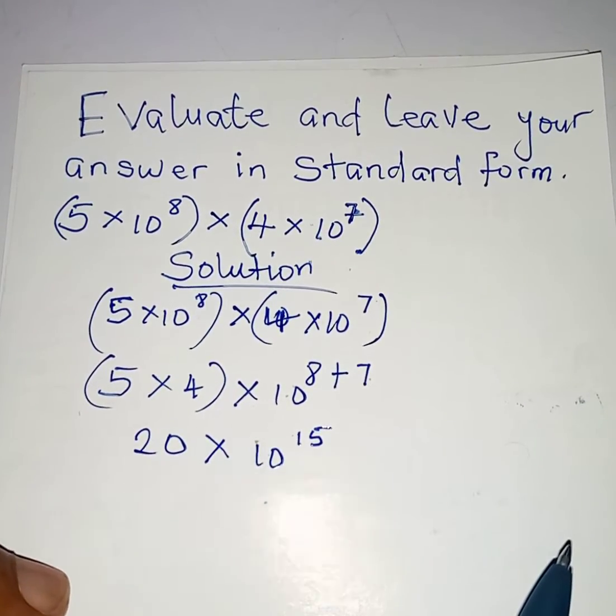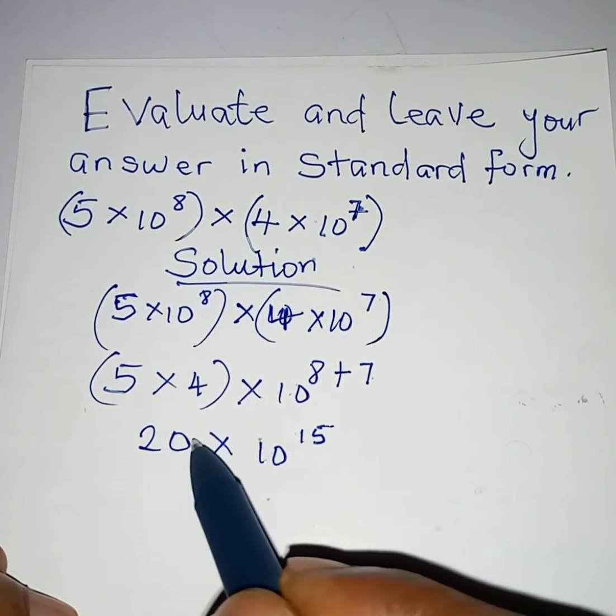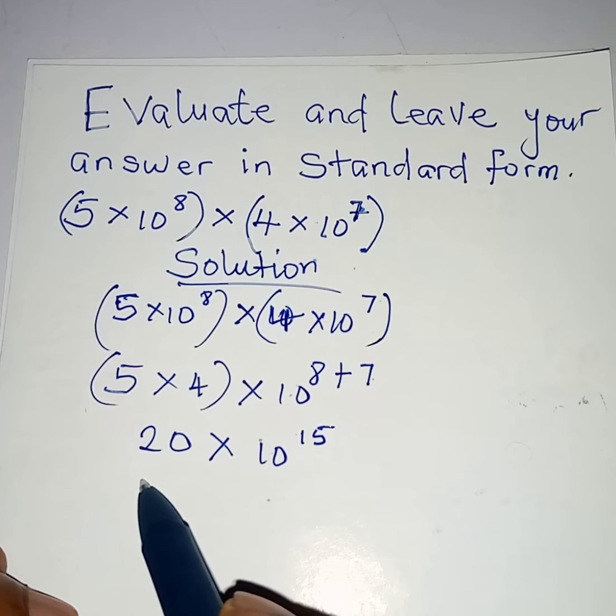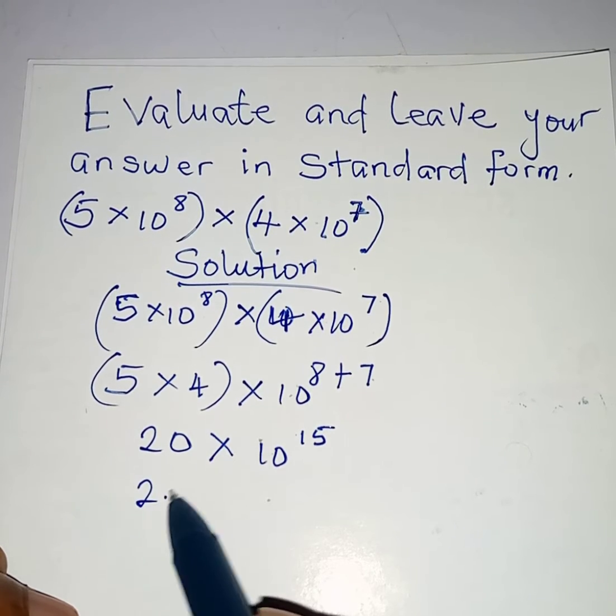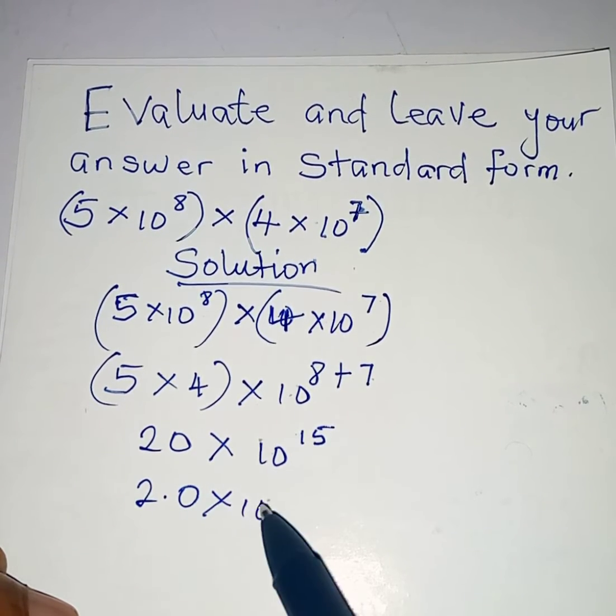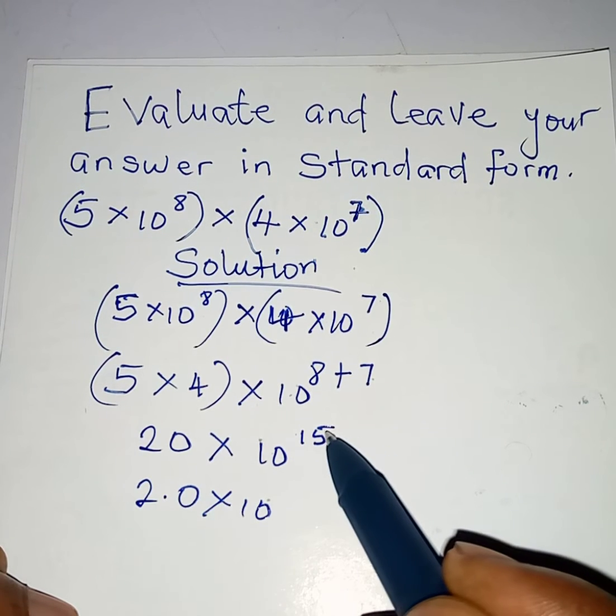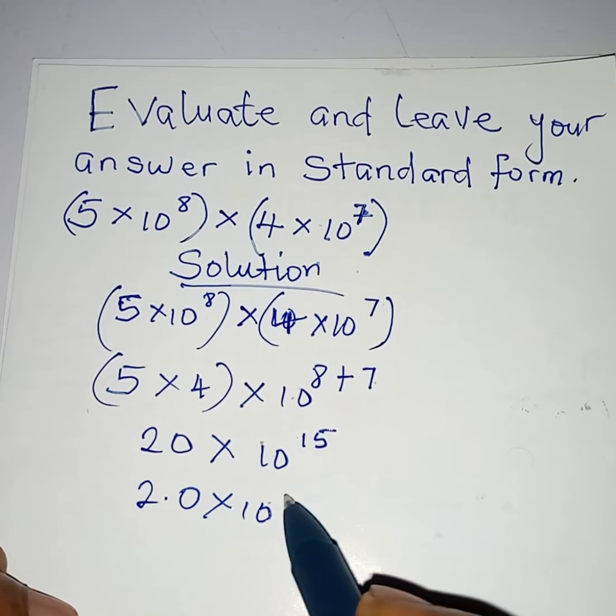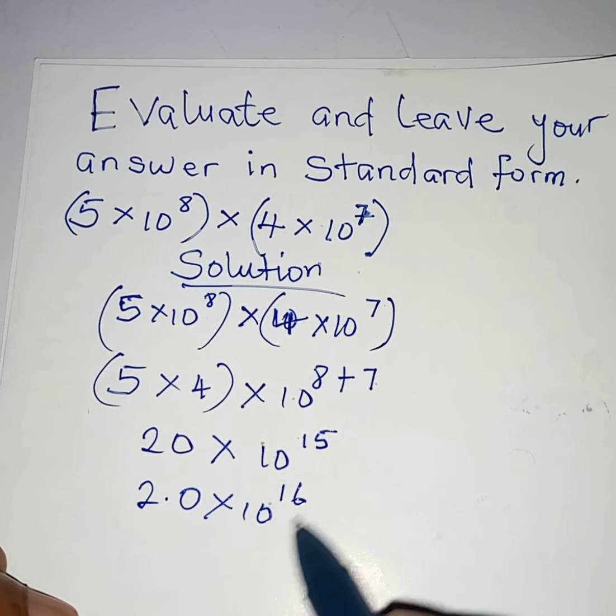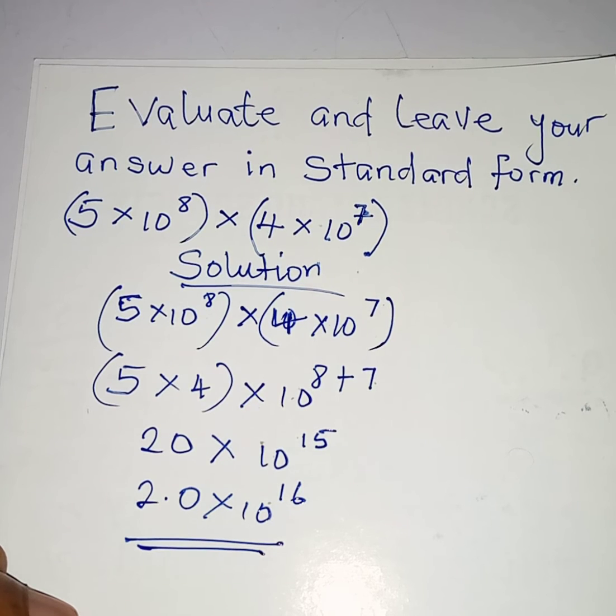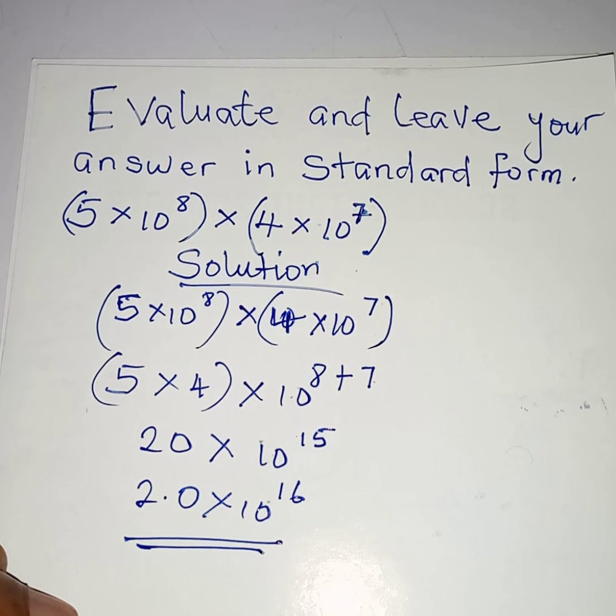But remember in standard form we normally have our decimal point at the back of the first non-zero number. So this is supposed to be 2.0 times 10 raised to power of, because we've moved past one number, we will increase the power here so it will be 16. So this is the answer in standard form. Thank you for watching.